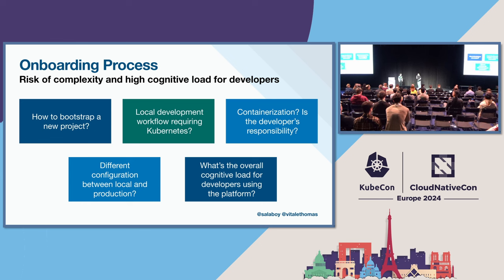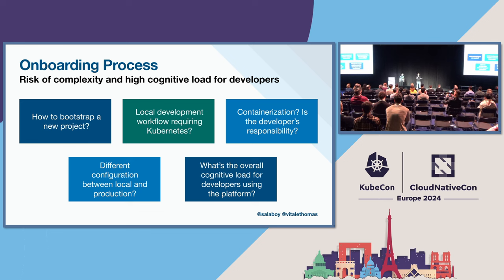The next step is configuring the deployment, which will be different in a local environment — especially if we use Kubernetes locally — versus production. How much detail from Kubernetes are we exposing to developers? That's another important challenge when designing this end-to-end experience on top of Kubernetes. And finally, when we put all these pieces together, we should evaluate how much cognitive load we're adding to developers using the platform. If it's too much, we need to iterate through our design and fix areas that are negatively affecting developer experience.